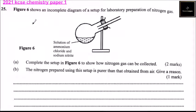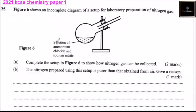Question number 25. Figure 6 shows an incomplete diagram of a setup for laboratory preparation of nitrogen gas. We have a boiling tube flask here with a tube connected, corked and with a tube connected. We are told the solution has a solution of ammonium chloride and sodium nitrite. Complete the setup in figure 6 to show how nitrogen gas can be collected.